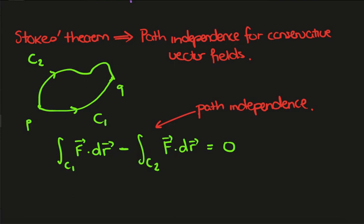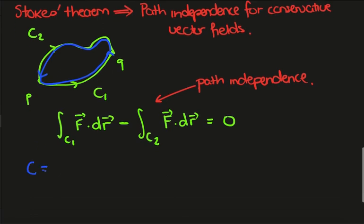So now what we'll do is, we'll consider the closed path given by going along C1 and then backwards along C2. So we'll consider the path C, which is given by C1 minus C2.